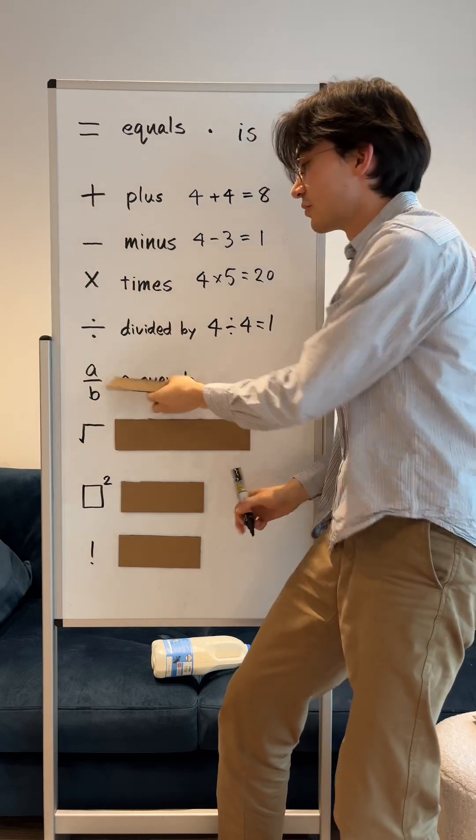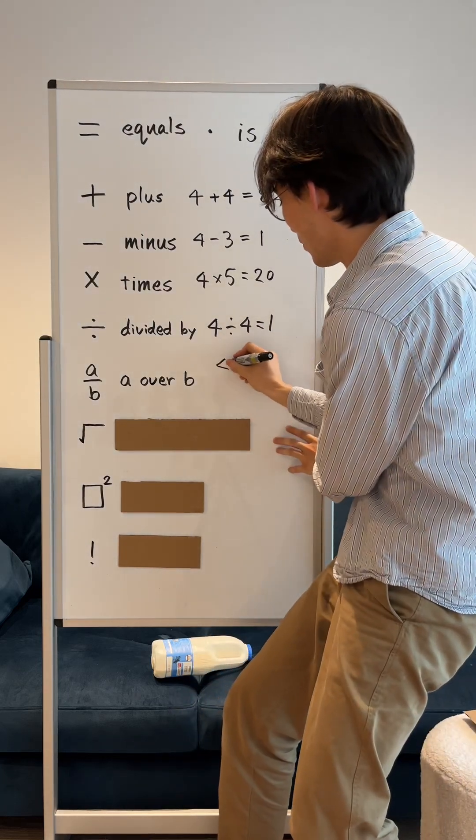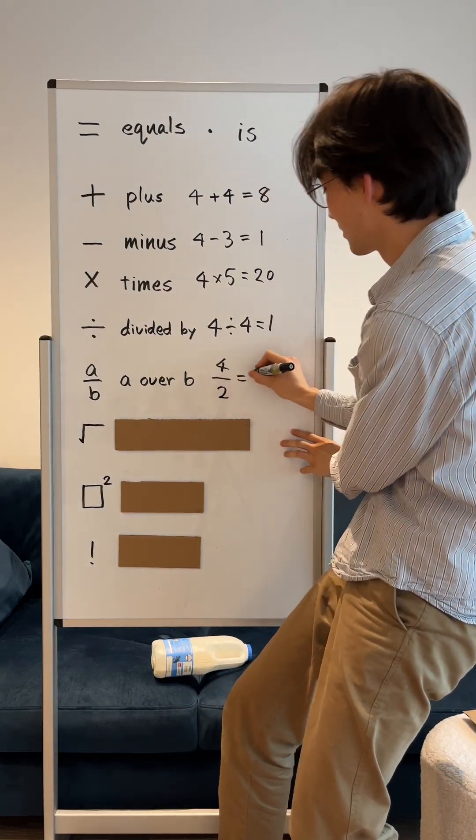For fractions, we say A over B. So 4 over 2 is 2.